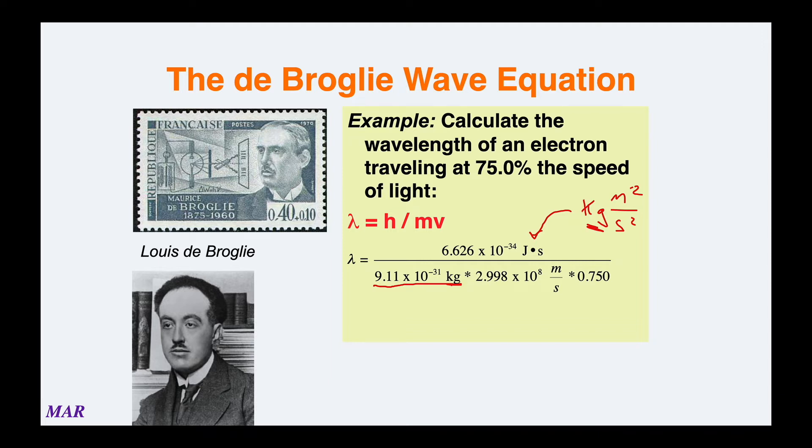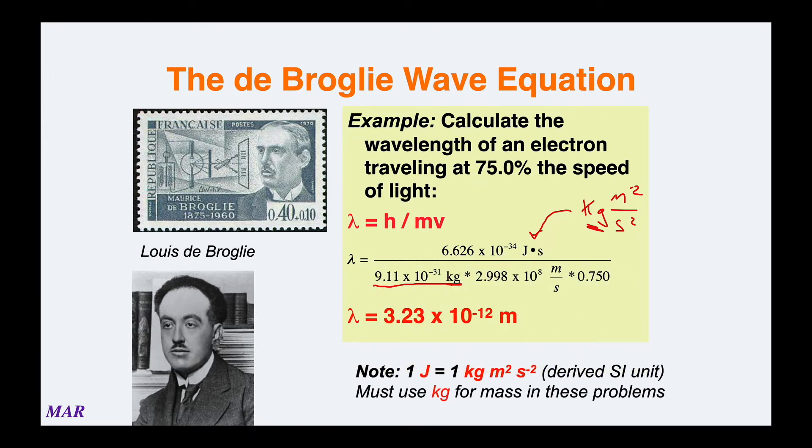Speed of light, 75% would be 0.750. Throw all of this in your calculator and you end up with a wavelength 3.23 × 10⁻¹² meters.